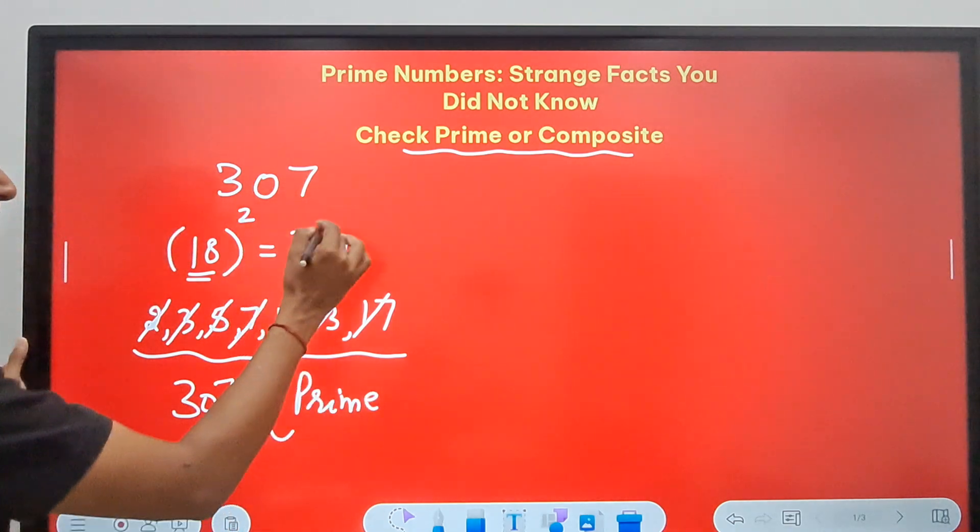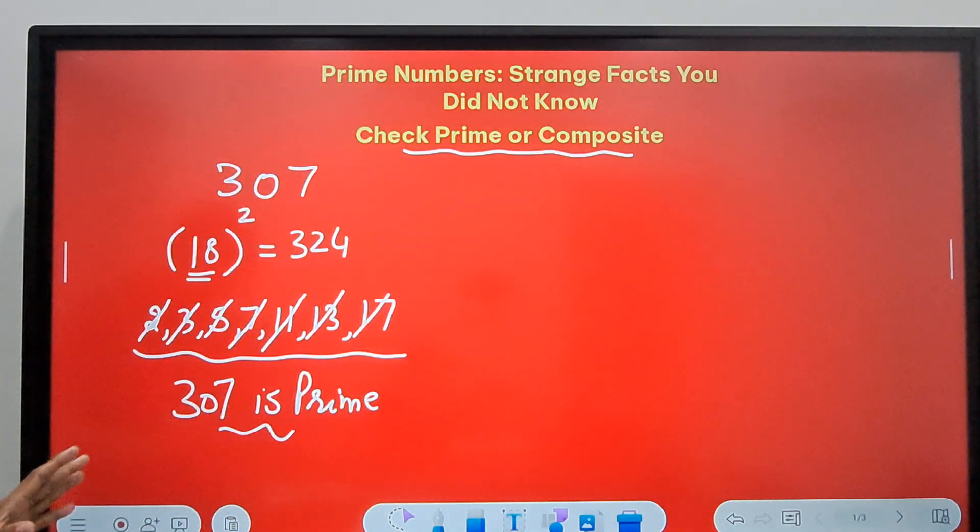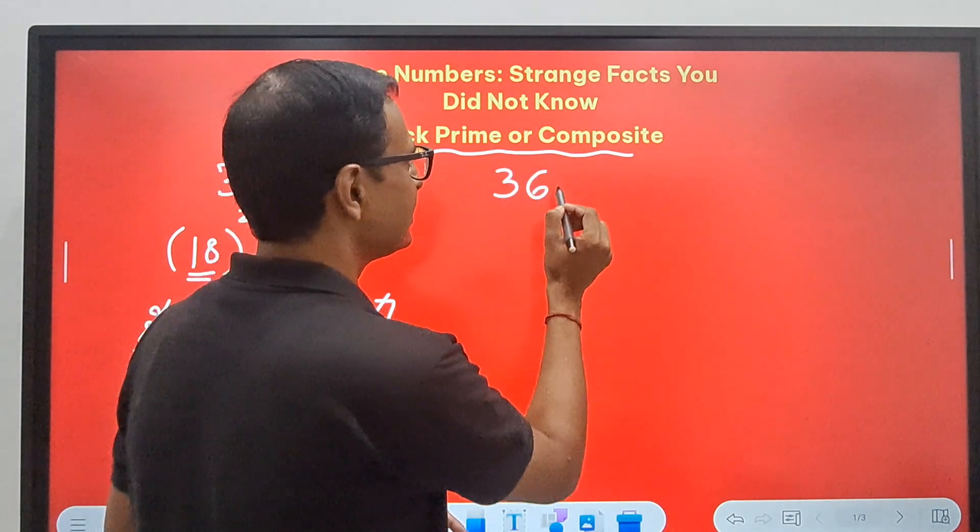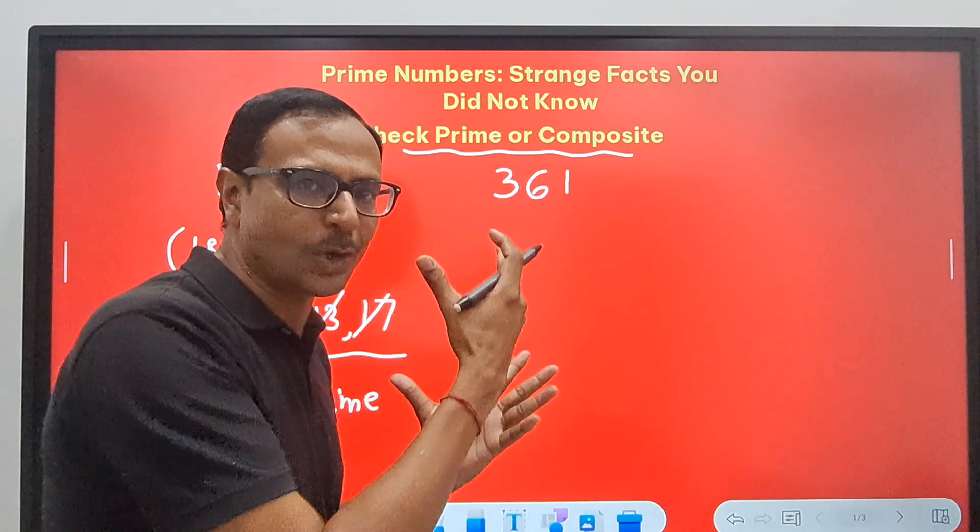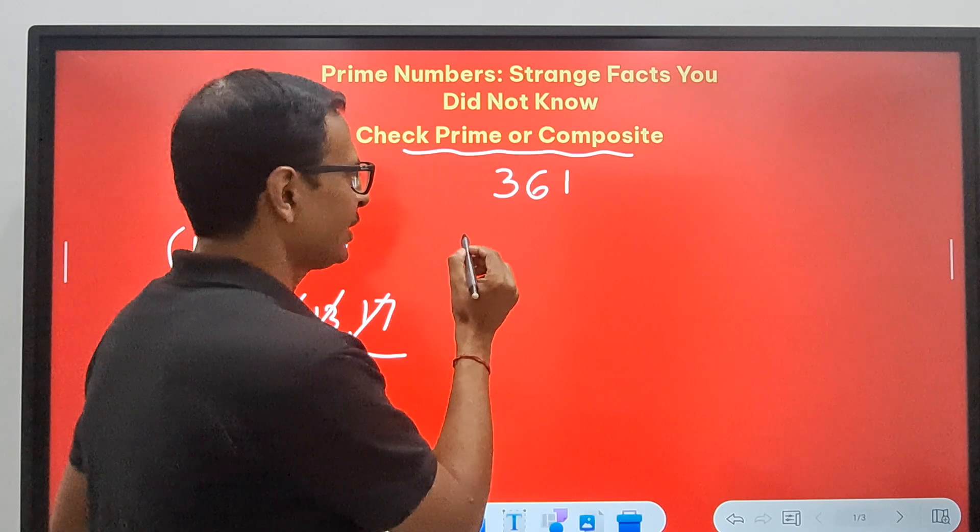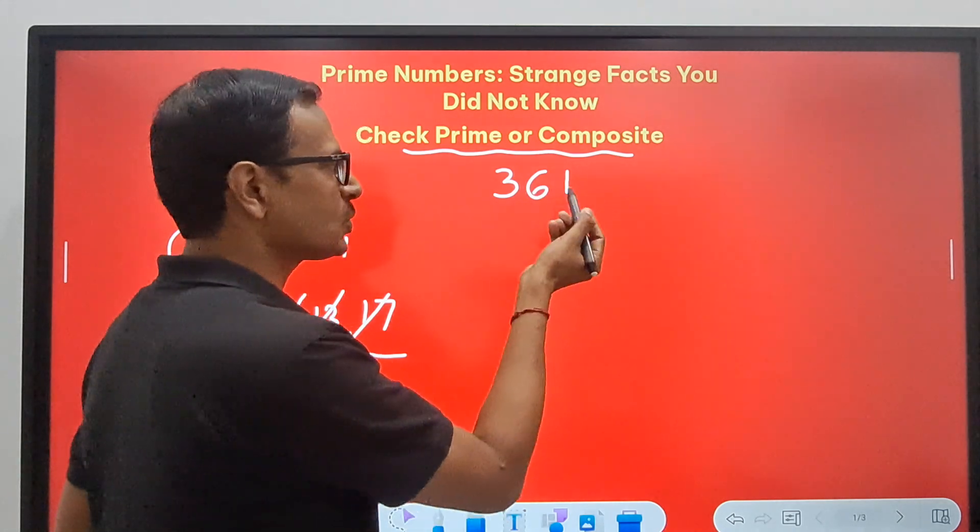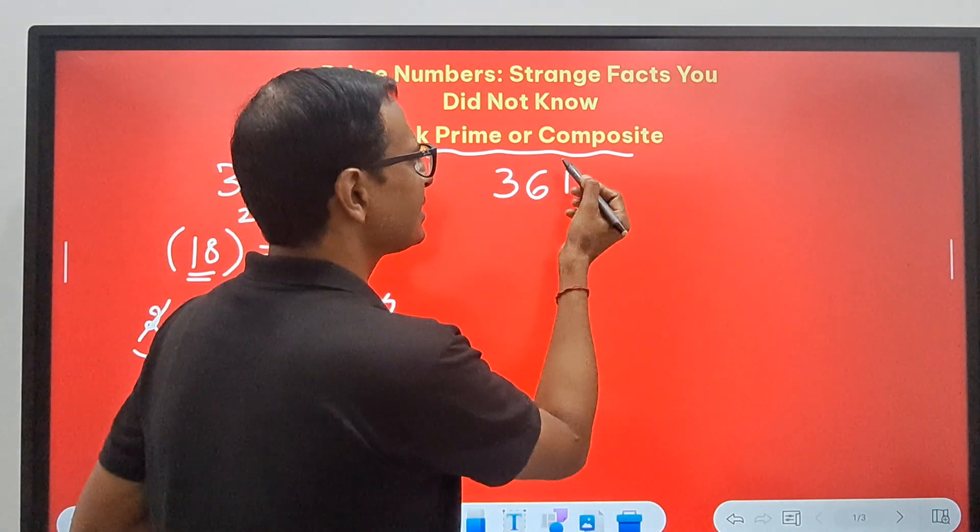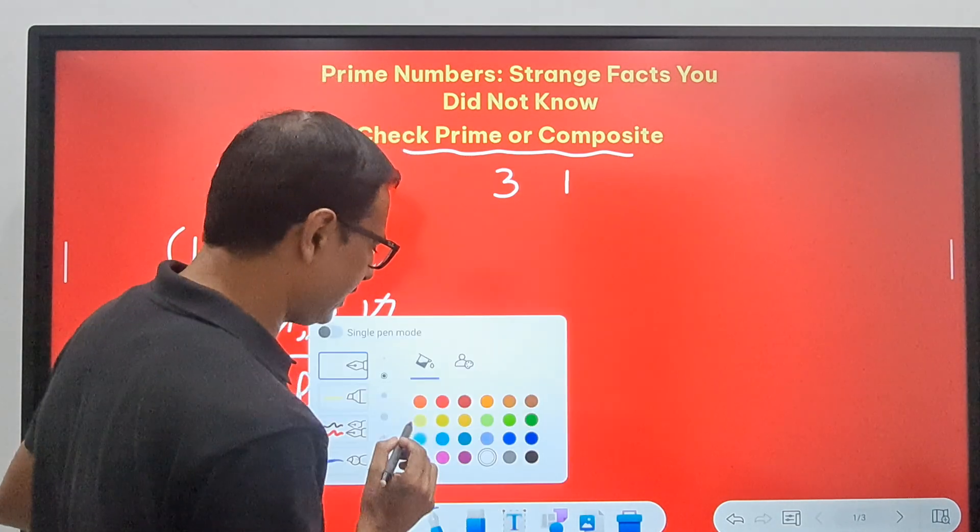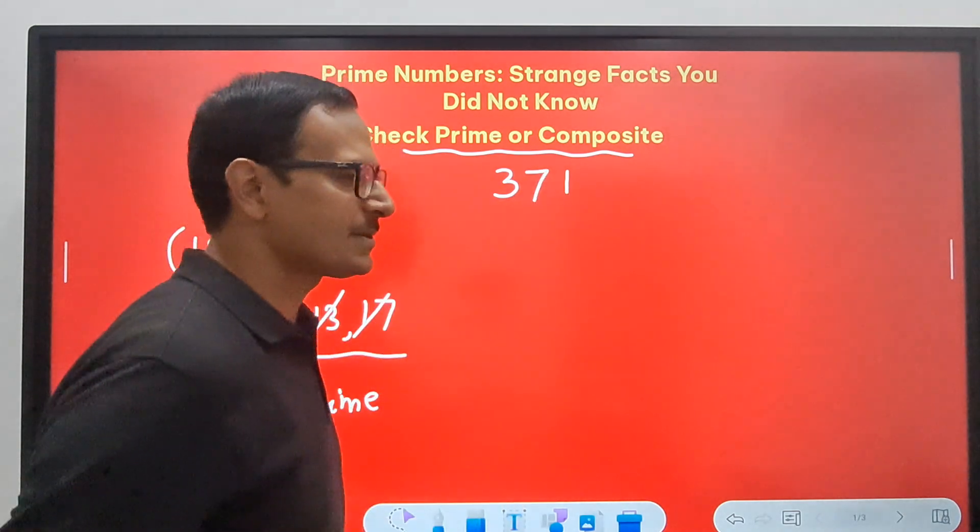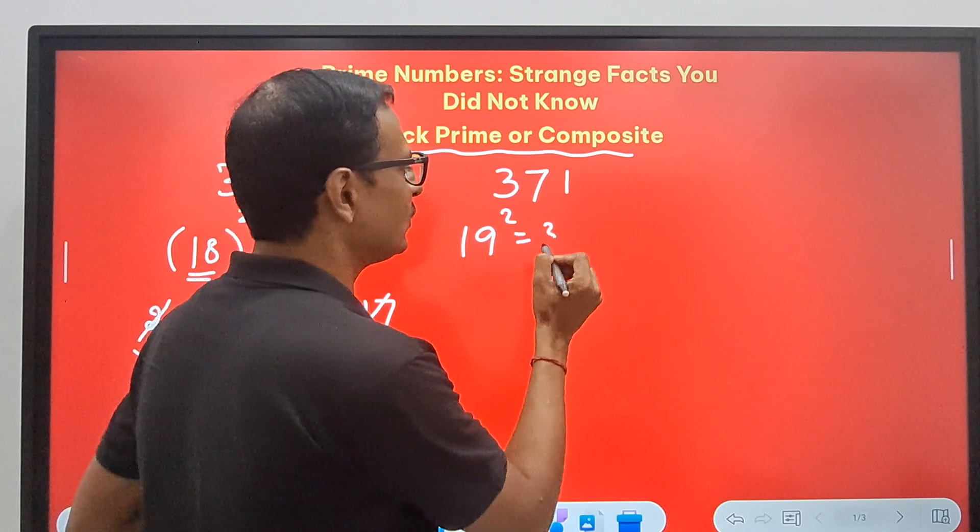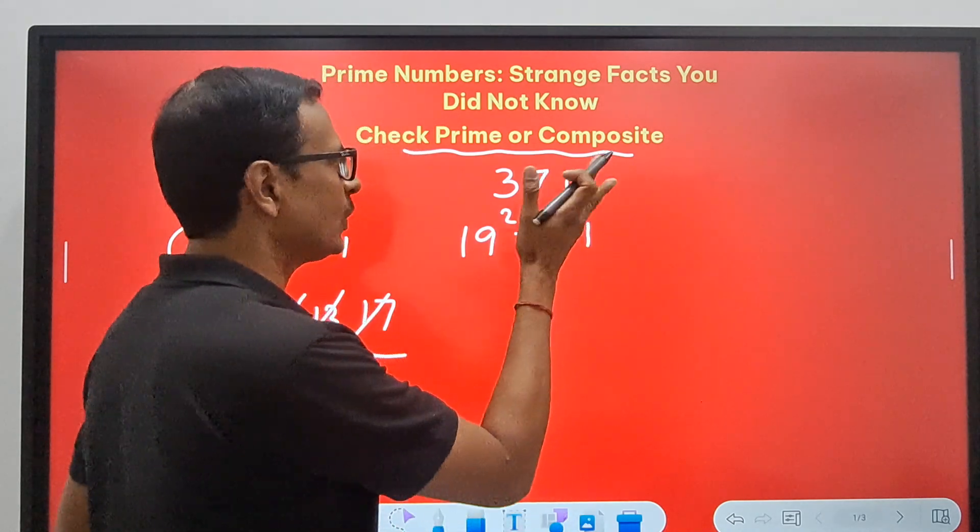If any of these numbers divides 307, then it will not be prime. Let me take an example where we know it's not prime. I know it's not prime because I know the factors, but I will do it the same way. So I need a square. Let's make it more complicated. I'll go for 371 and now I want to check this.